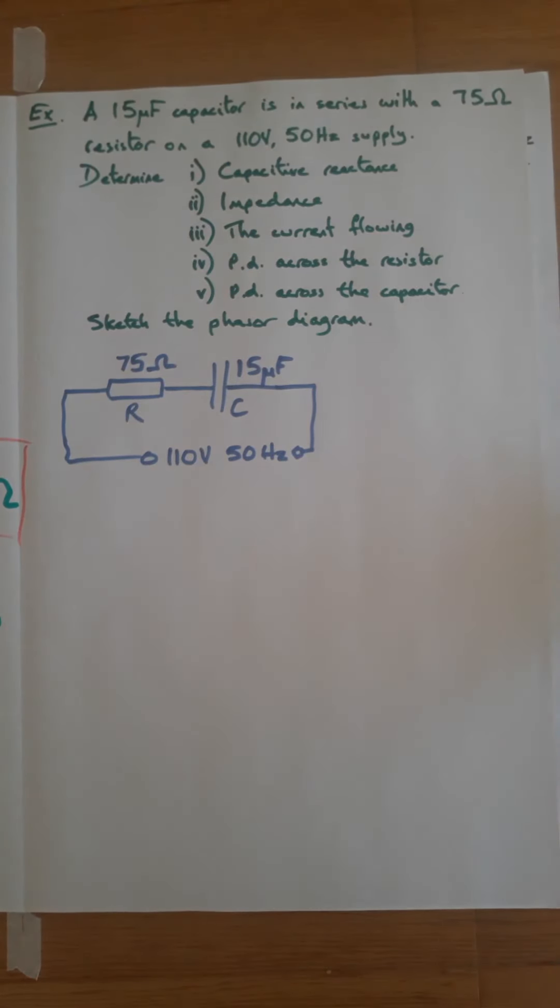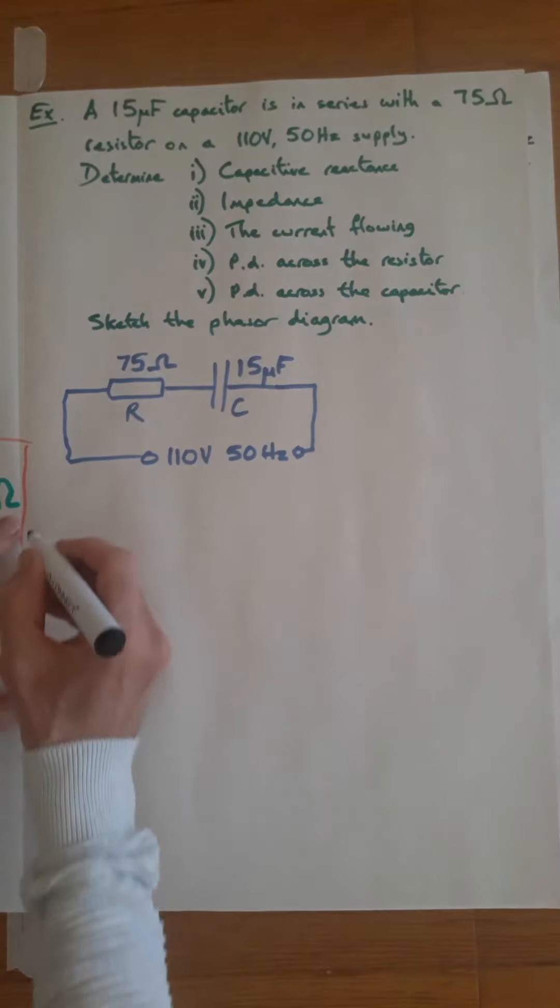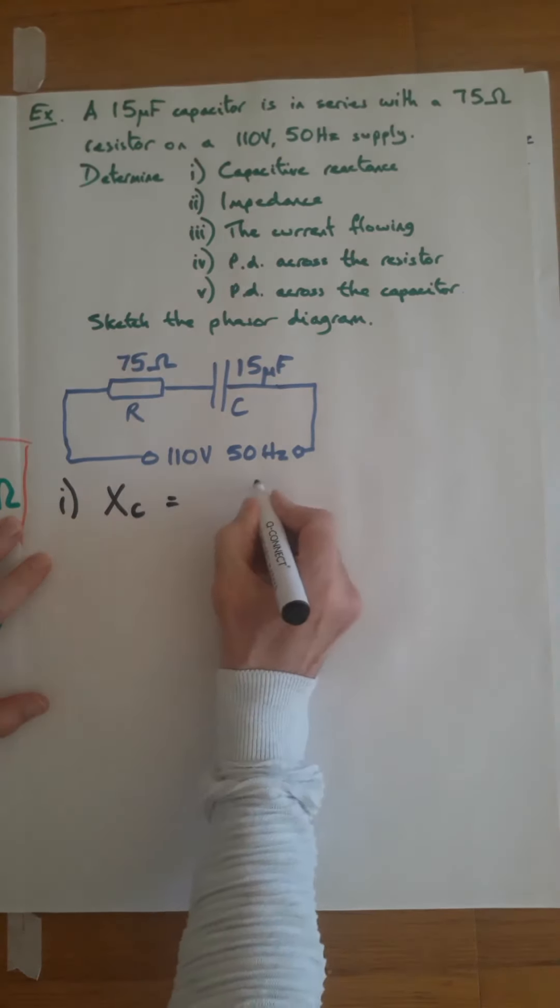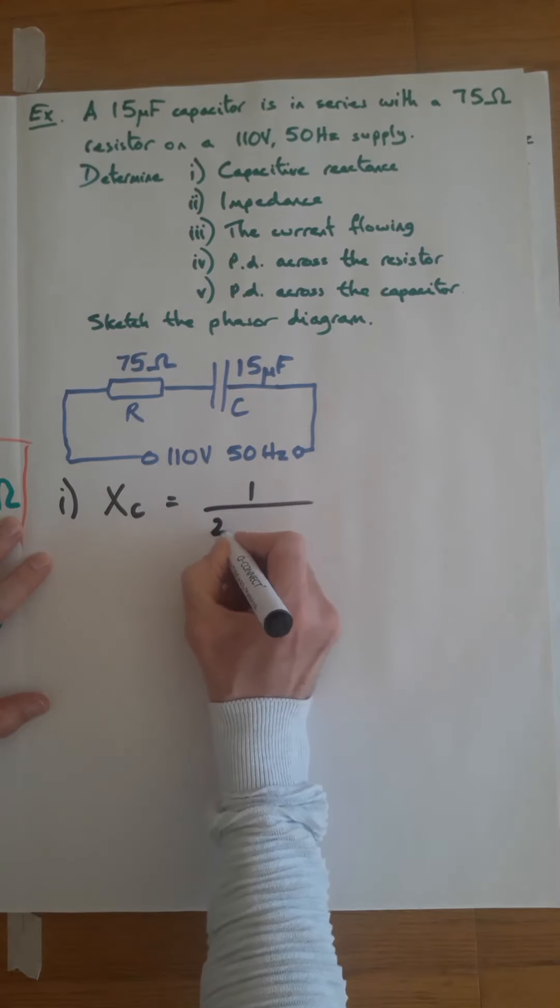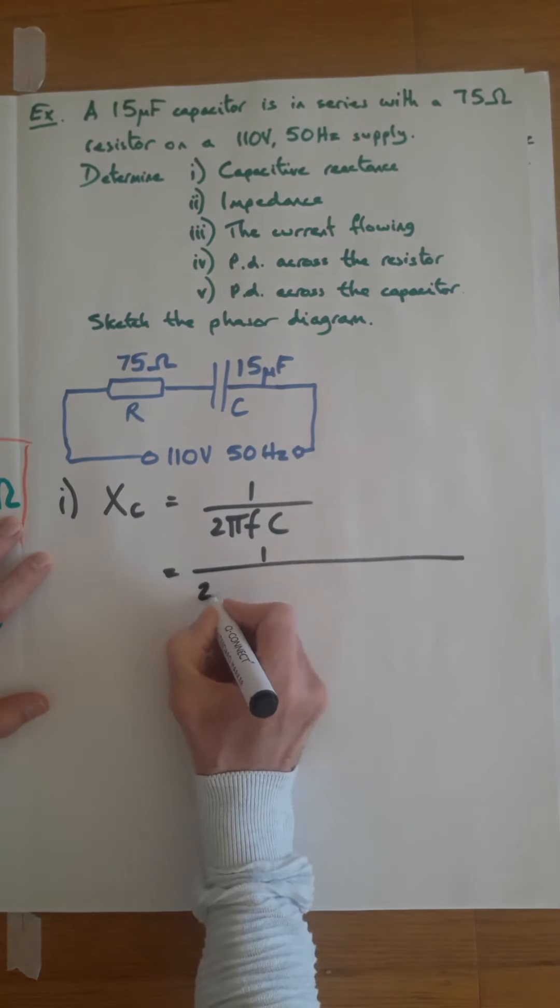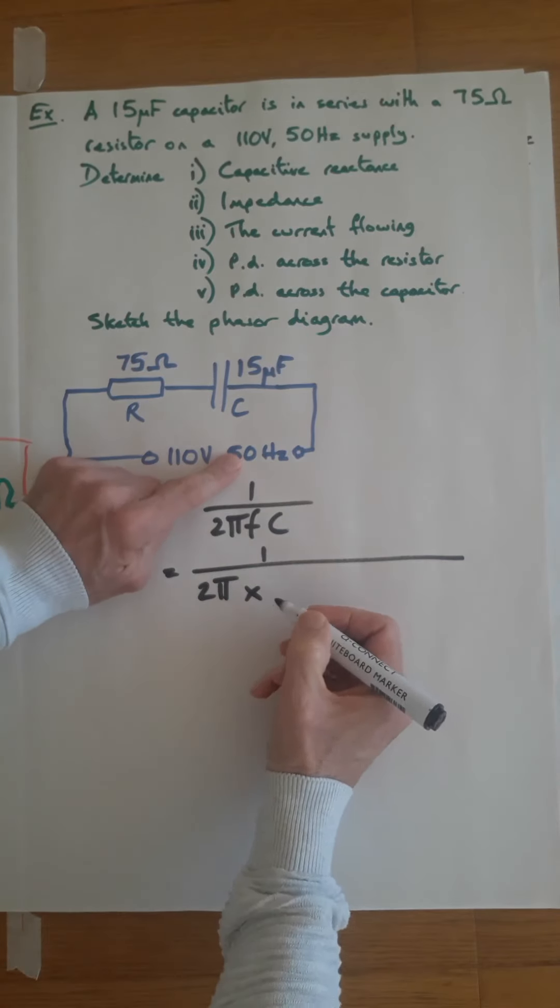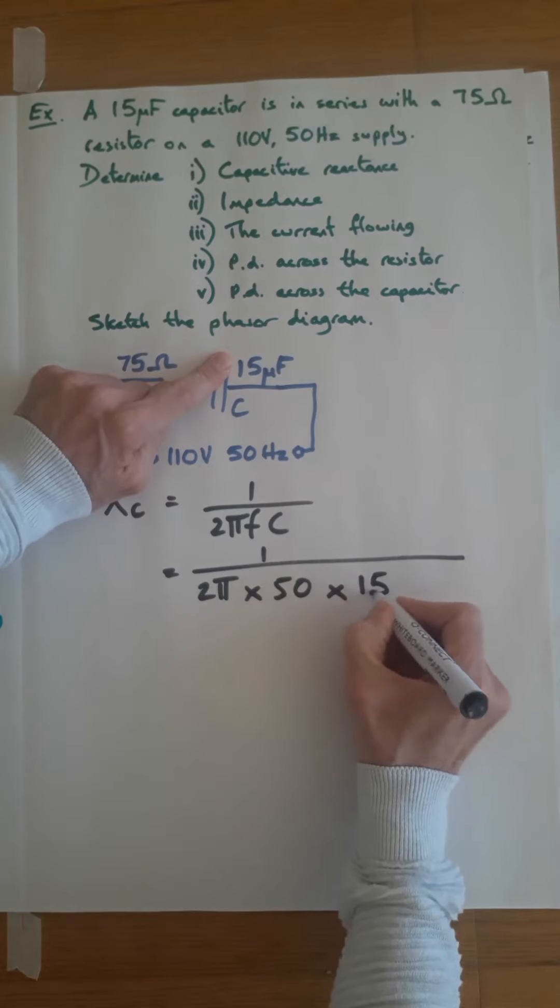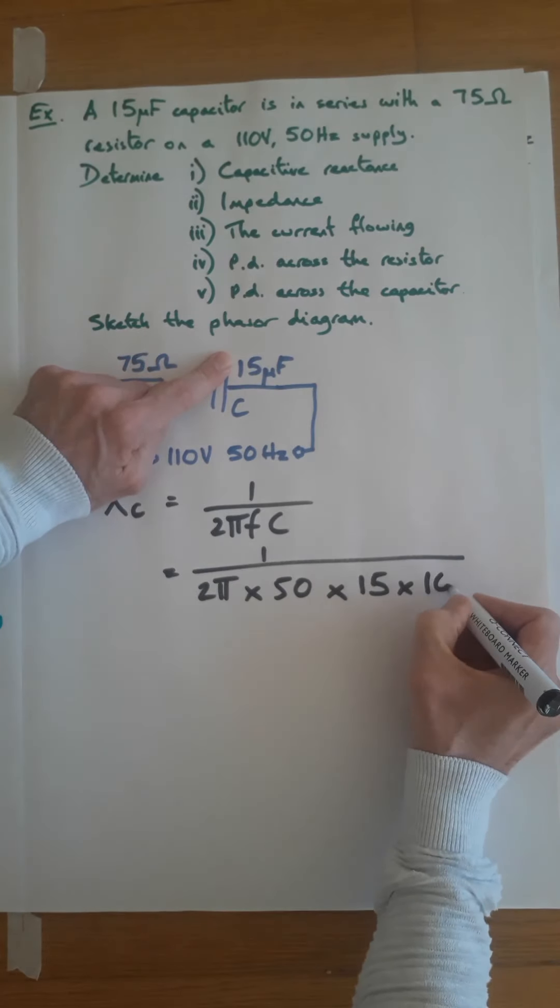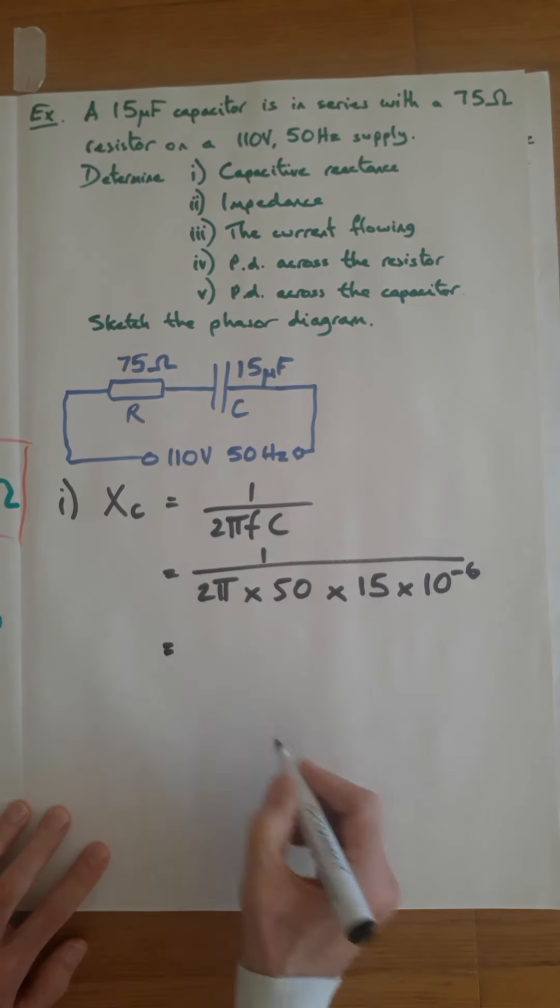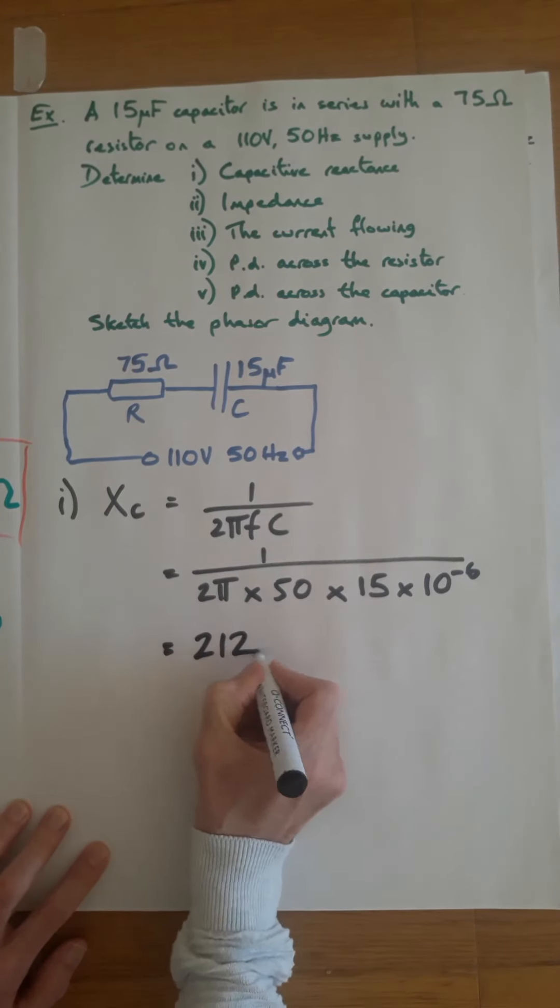Step one, the capacitive reactance: Xc is 1 over 2πfc. Put the numbers in: 1 over 2π times the frequency, which is 50, times the capacitor value, 15 microfarads. If you work that out, you'll get 212 ohms.